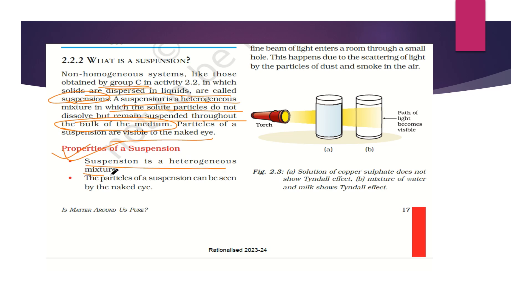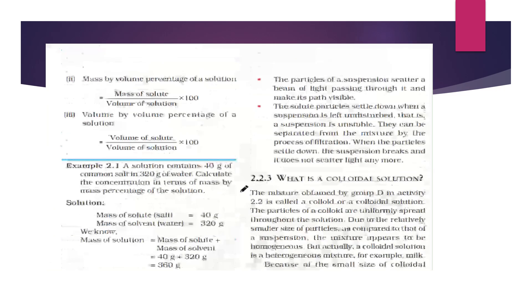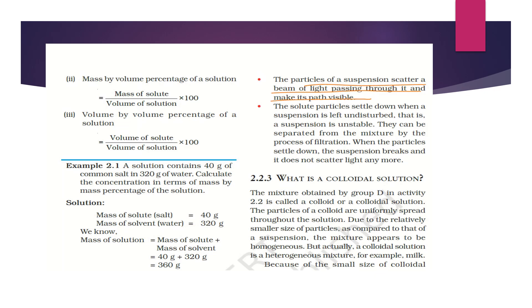So, what are the properties of suspension? First, suspension is a heterogeneous mixture and the particles of suspension can be seen by the naked eye. If you mix chalk powder in water, you will see the particles of chalk powder with your naked eye. Similarly, with wheat flour and water, you can see the wheat particles. The particles of a suspension also scatter a beam of light passing through it and make its path visible.